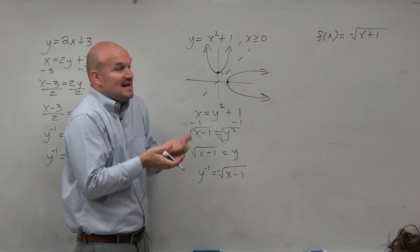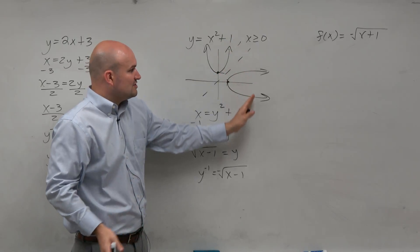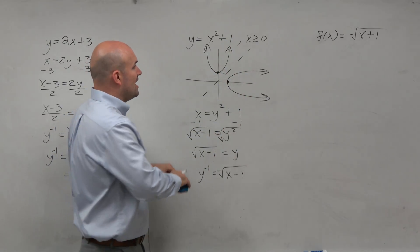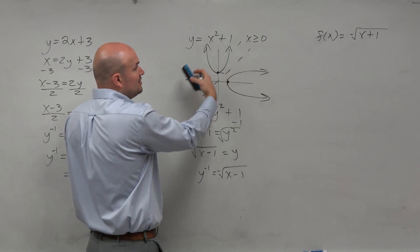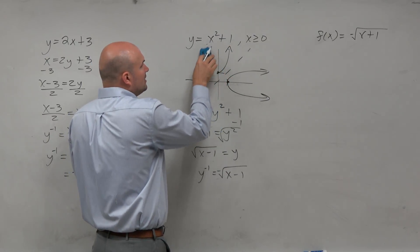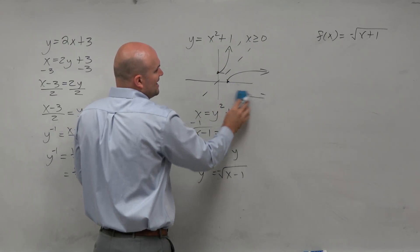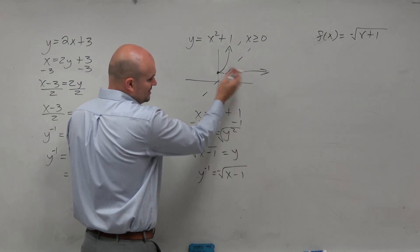The problem with it, if it's not one to one, the inverse is not a function. So that's why it's either you're going to get a problem like this and say, hey, does it have an inverse? And you say, no, it's not one to one. Or it will be restricted. And it'll say, find the inverse in which case we can.